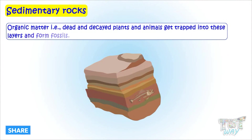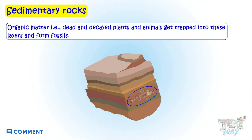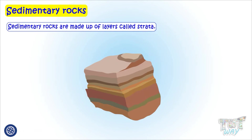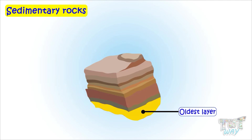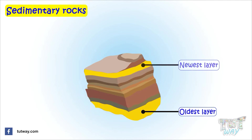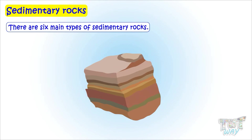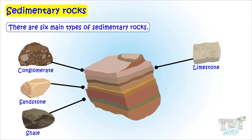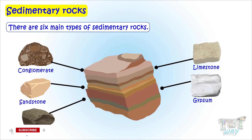Organic matter — that is, dead and decayed plants and animals — gets trapped into these layers and forms fossils. Sedimentary rocks are made up of layers called strata. The layer at the bottom is the oldest one and the topmost layer is the newest one. There are six main types of sedimentary rocks: conglomerate, sandstone, shale, limestone, gypsum, and grisha.